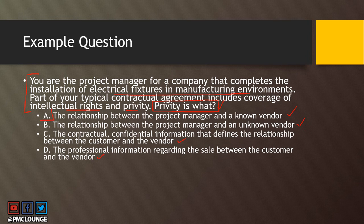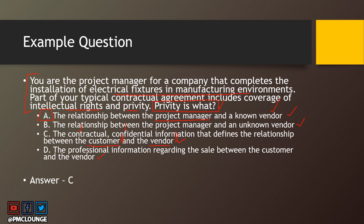If you think the answer is (a) you are actually wrong — the correct answer is (c). The problem with answer (a) is that privity is not necessarily a relationship between just the project manager and a vendor. The relationship is contractual, it is confidential, and it defines the relationship between the customer and the vendor — most likely between two organizations, not just the project manager of one organization and the vendor organization as a whole. So the correct answer is (c).